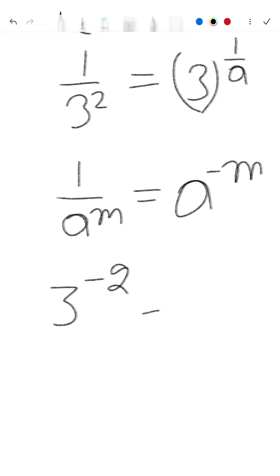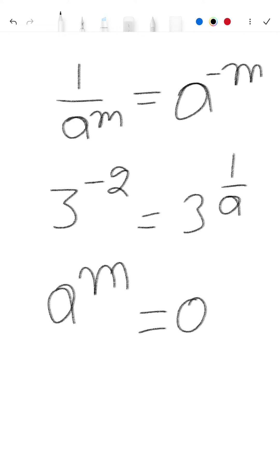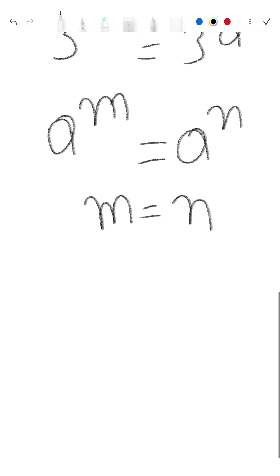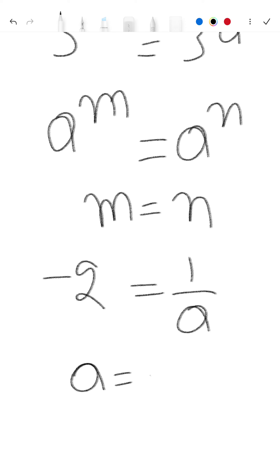This gives us 3^(-2) = 3^(1/a). Since the base values are the same, the powers must also be equal — that is, if a^m = a^n then m = n. So -2 = 1/a, which means a = -1/2.